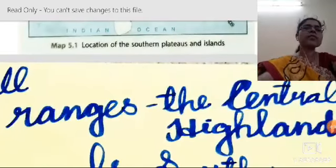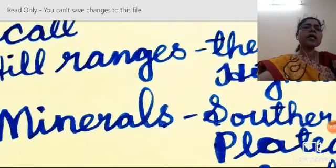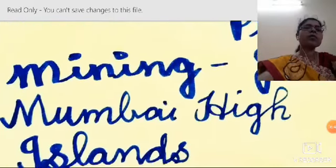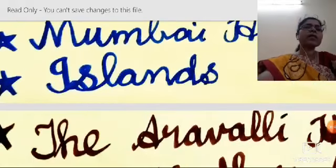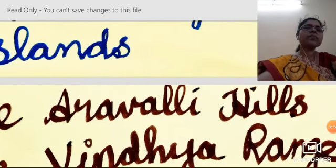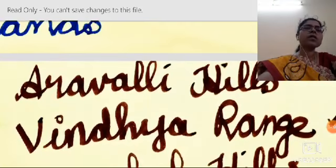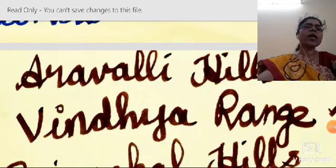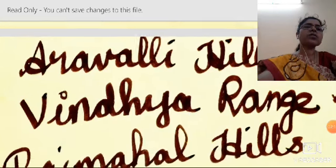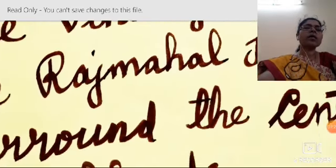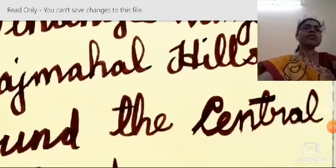We will recall the hill ranges surrounding the Central Highlands. These are the Aravalli Hills, the Vindhya Ranges, and the Rajmahal Hills, which surround the Central Highlands.